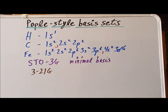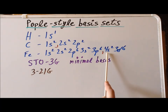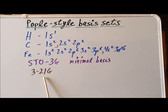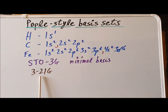Where 3-21G and STO-3G differ for iron is in the valence part. For the valence 4s and the five 3d orbitals, because we have a split valence basis set, there are two different versions of each: one more contracted version made up of two Gaussians and one more extended version made up of one Gaussian. It turns out that this split valence idea led to an incredible increase in accuracy.